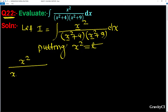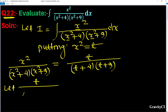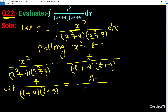So x² / [(x²+4)(x²+9)] becomes t / [(t+4)(t+9)]. This is a proper fraction, so we will express it in partial fractions. Let t / [(t+4)(t+9)] equal to A/(t+4) plus B/(t+9).